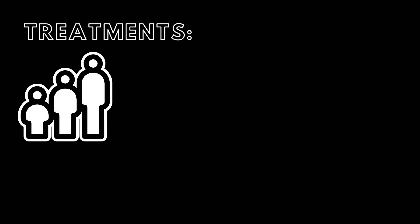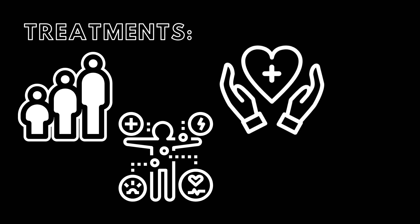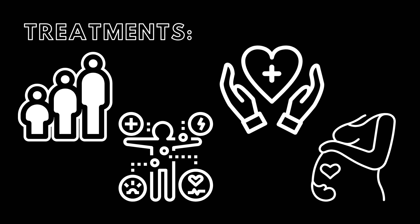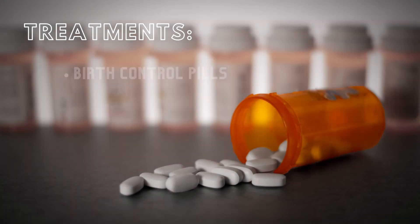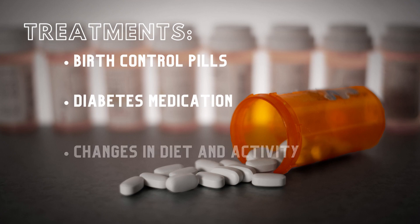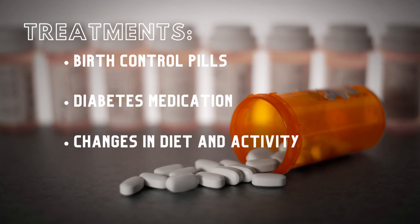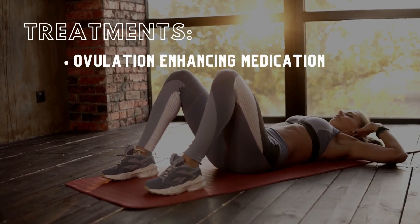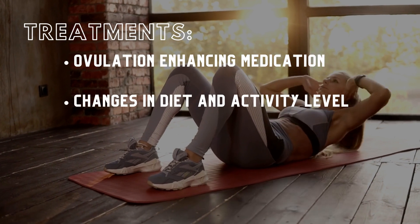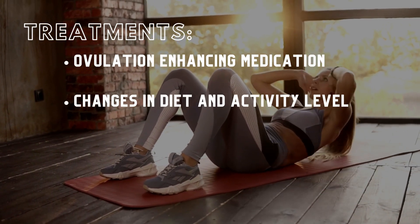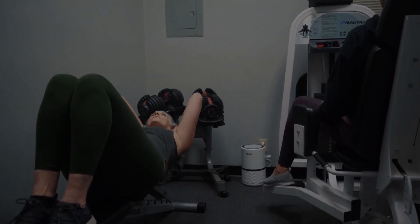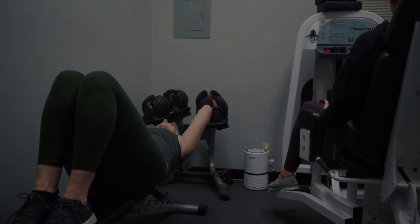Treatment is determined based on factors such as the patient's age, the severity of symptoms, the patient's overall health, and whether or not the patient wishes to become pregnant. For patients that don't want to become pregnant, treatment options can include birth control pills, diabetes medication, and changes in diet and activity. If a patient does wish to become pregnant, treatment options will often include medications to enhance ovulation and lifestyle changes that help the body use insulin more effectively, lower blood glucose levels, increase the ovaries' ability to ovulate, and reduce the severity of PCOS symptoms.